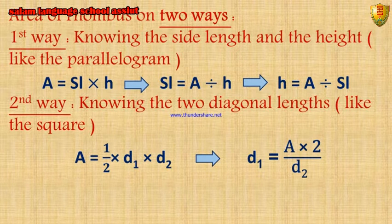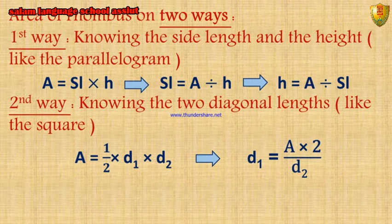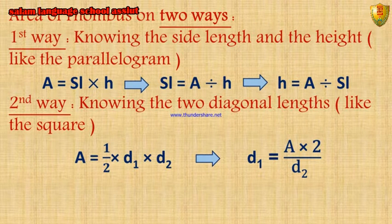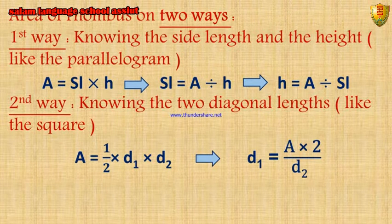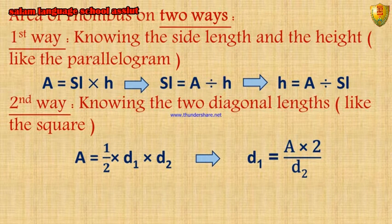Area equals half times diagonal 1 times diagonal 2. Notice that here the two diagonals are different, so we denote them diagonal 1 and diagonal 2. But in the square, it was half times diagonal times diagonal. We can get either diagonal if we know the area and the other diagonal: diagonal 1 equals area times 2 divided by diagonal 2.